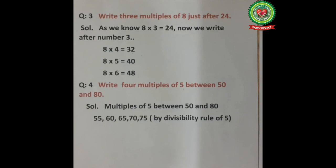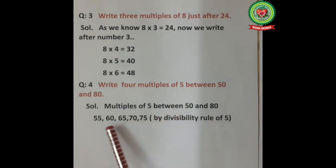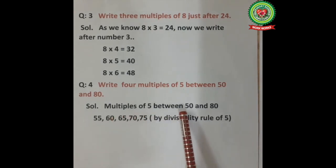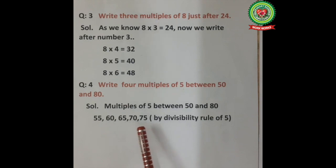Type 4: write 4 multiples of 5 between 50 and 80. Whenever we find multiples between two numbers, we apply divisibility rules. The rule for divisibility by 5 is that the last digit should be 0 or 5. So multiples of 5 between 50 and 80 are 55, 60, 65, 70, and 75.